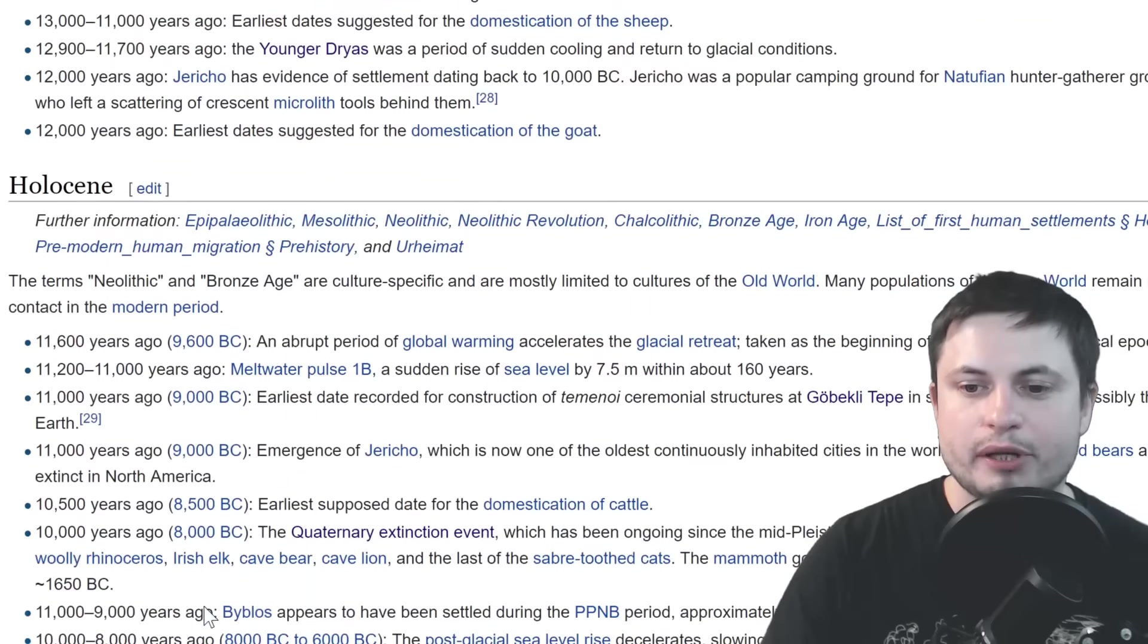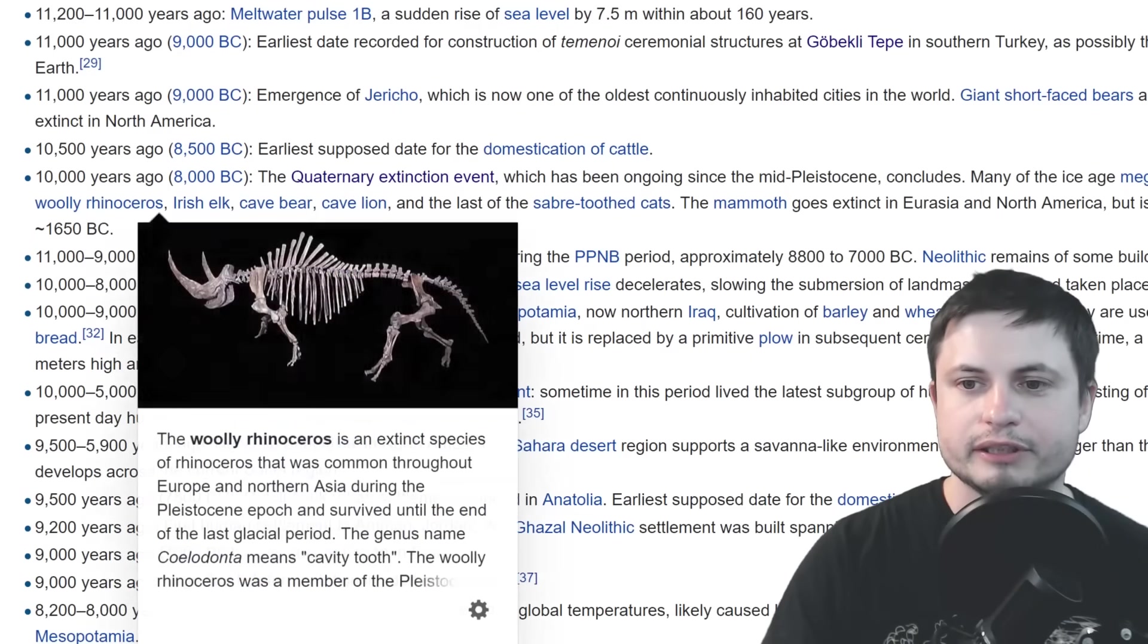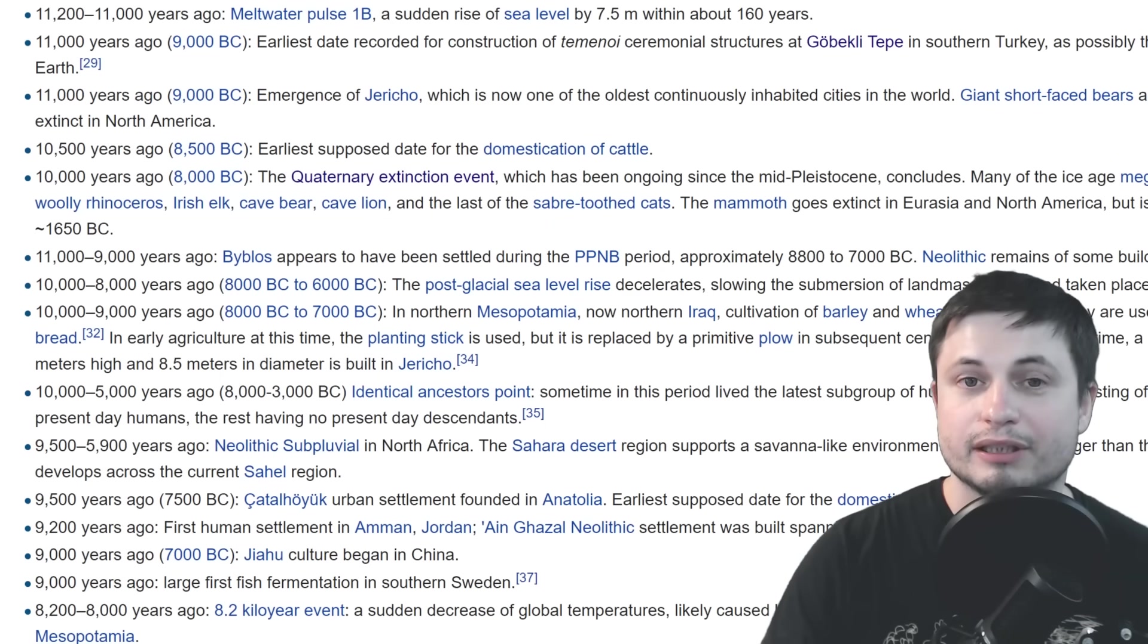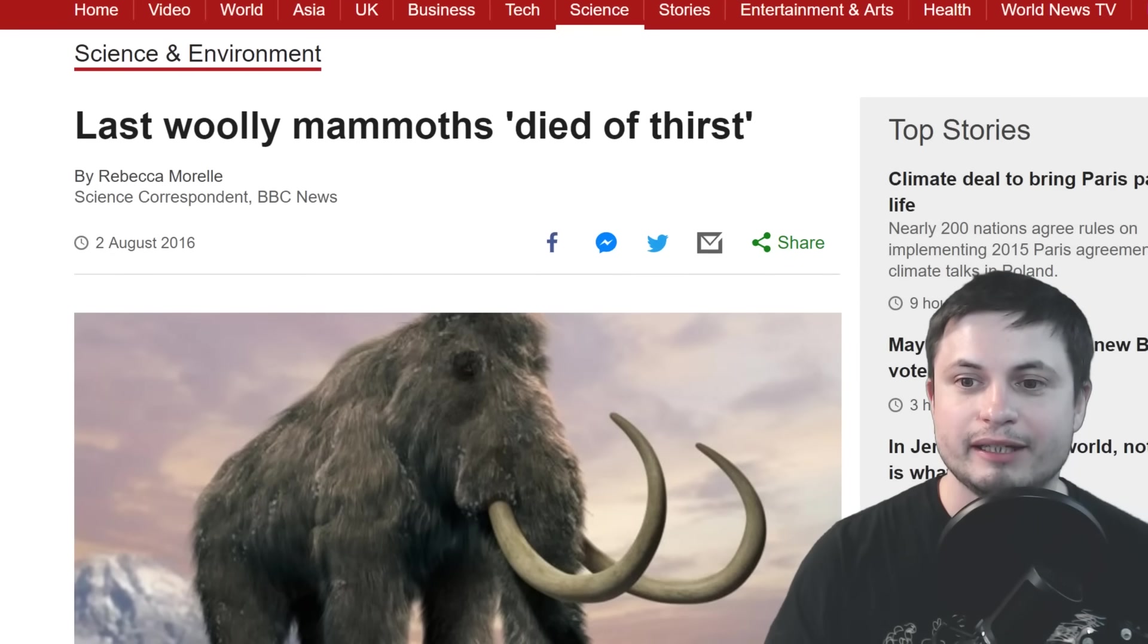On the other hand the animals that I mentioned that went extinct, they basically disappeared in the so-called Quaternary extinction event which happens basically 2,000 years after that, way after the actual glaciation event. One major problem with the theory of these animals being destroyed by asteroid is that there were quite a lot of the animals left, specifically mammoths, for several thousand years but they were able to survive on islands very close to where Greenland is.